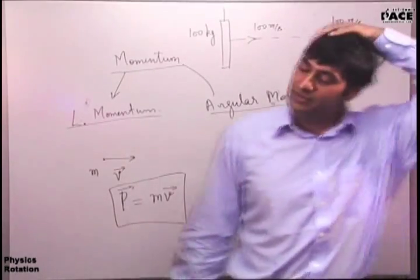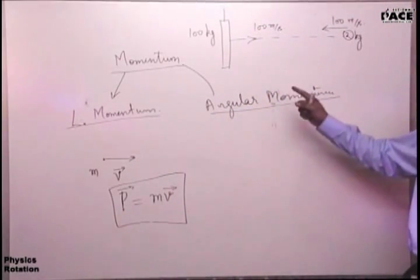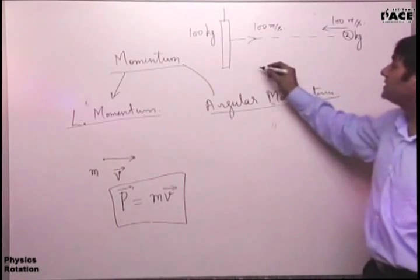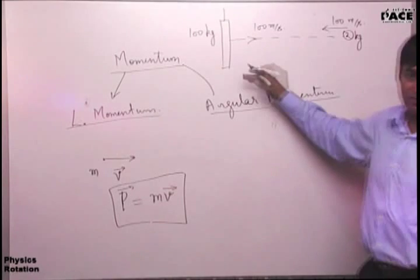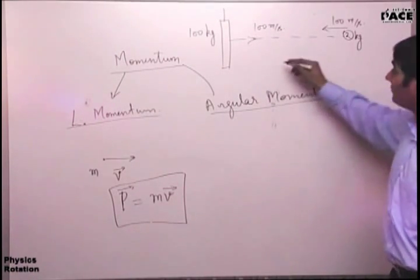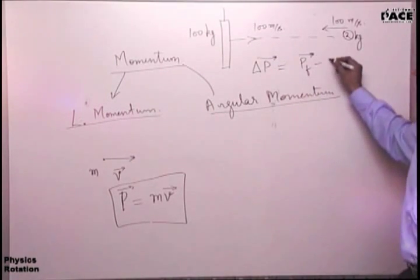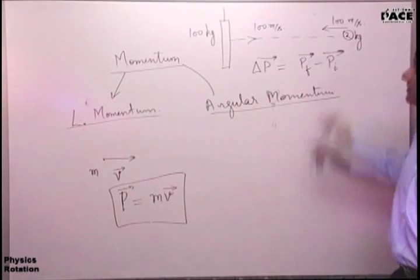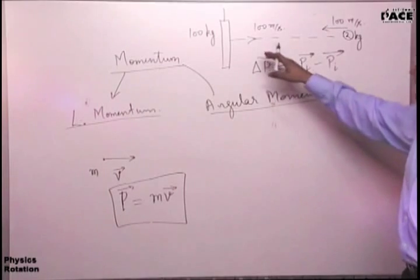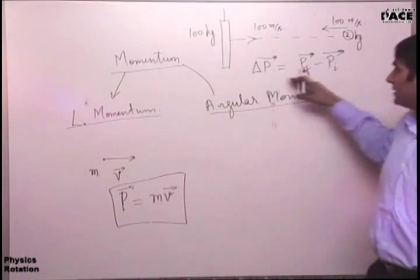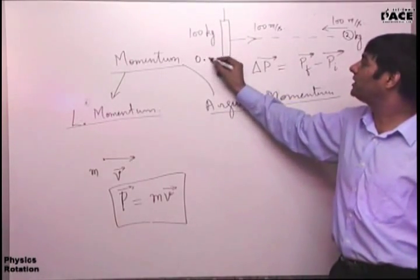Momentum is a vector. Change in momentum is also a vector. What is the direction of change in momentum? Change in anything in physics is always defined as final value minus initial value. Always remember this. We are talking about vectors, so the answer is 400 i-cap. If you have assumed this to be the positive direction of the x-axis, you will get 400 i-cap as the change in momentum.